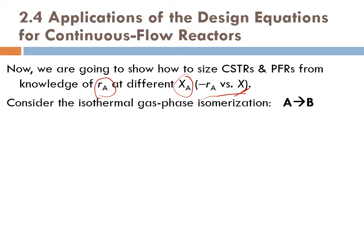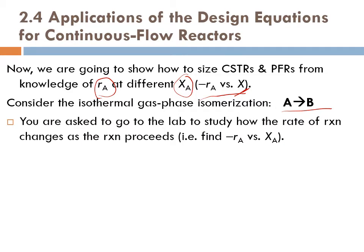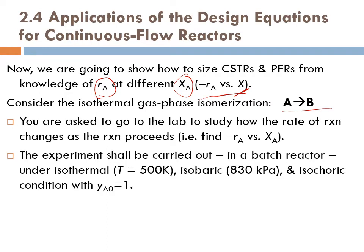Consider the isothermal gas phase isomerization A goes to B. You are asked to go to the lab to study how the rate of reaction changes as the reaction proceeds, i.e., to find minus rA versus xA. The experiment shall be carried out in a batch reactor, just like you did in applied physical chemistry. The experiment shall be carried out under isothermal, isobaric, and isochoric conditions with pure A.